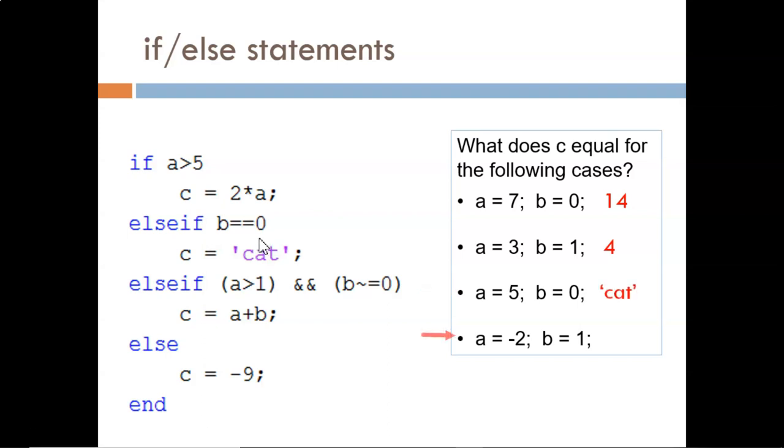For the final example, we see the first condition is false. The second condition is false. The third condition is false. So we reach the else statement. There are no conditions here to evaluate, so this branch is chosen, and c equals negative 9.